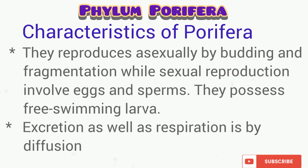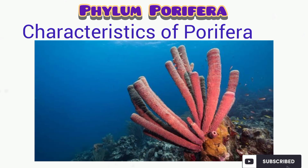Reproduction in this organism is usually carried out through the process of budding and fragmentation, while sexual reproduction involves fusion or joining together of gametes. Note that the Porifera has an asymmetrical body plan. As you can see from the diagram, they cannot be cut into two equal halves through any plane, so this is termed an asymmetrical body plan.